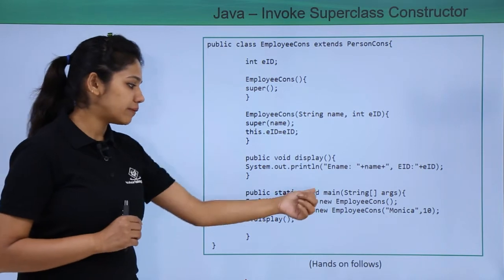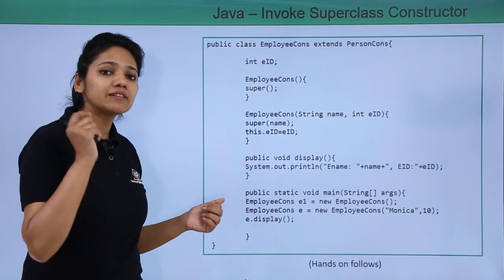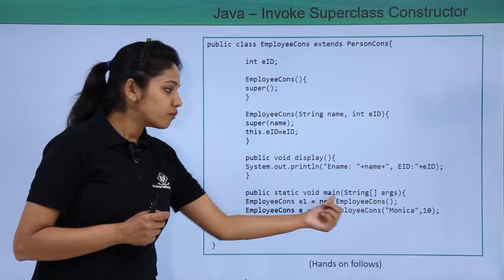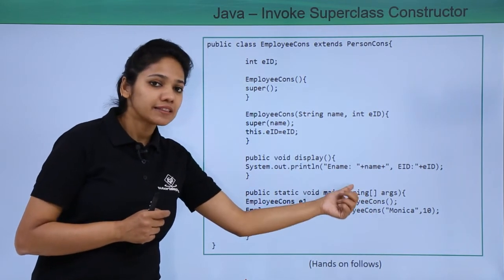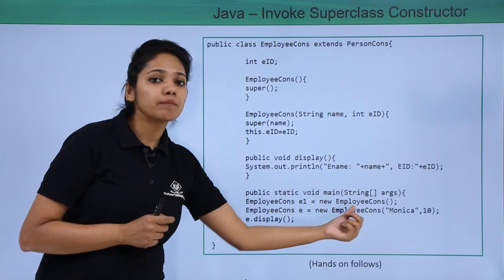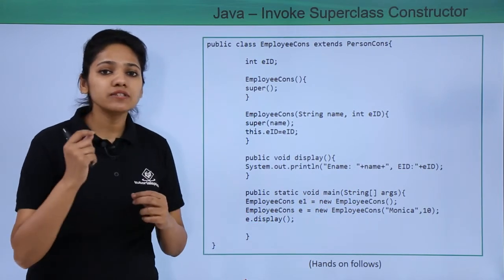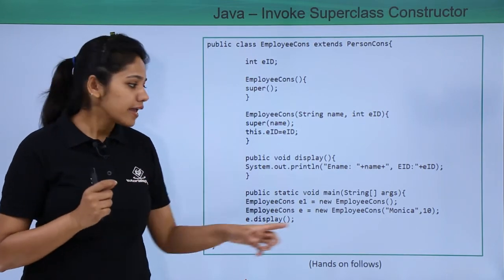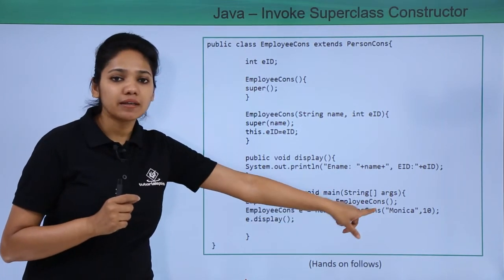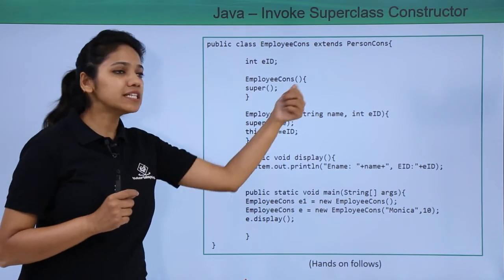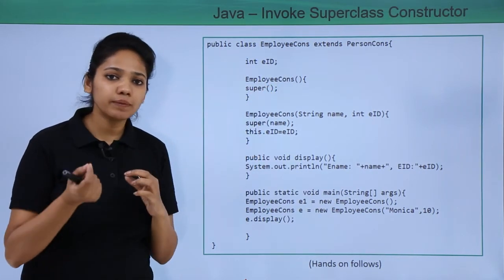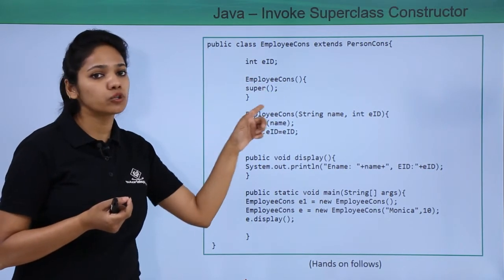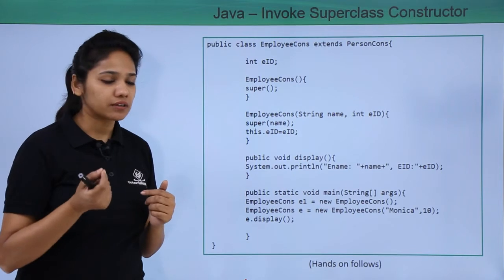The employee name will be fetched from the parent class and the employee ID from the child class. In the main method, when you create an instance of the child class without any parameters, it invokes the empty constructor, and this child class constructor then invokes the superclass or parent class constructor.